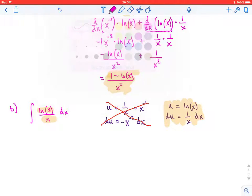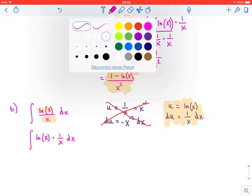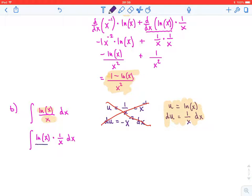I'm going to rewrite this integral. Instead of ln(x)/x, I'm going to write ln(x) times 1/x dx. And you can see that this right here is our u, and this entire product right here is our du. So if we substitute, this becomes the integral of u du.